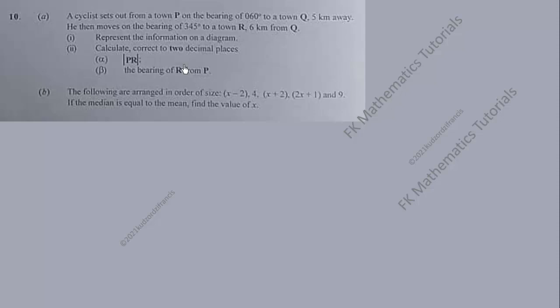Question 10: A cyclist sets out from a town P on the bearing of 060 degrees to a town Q 5 kilometers away. He then moves on the bearing of 345 degrees to a town R 6 kilometers from Q. Represent the information on a diagram. Calculate correct to two decimal places the magnitude of PR and the bearing of R from P.